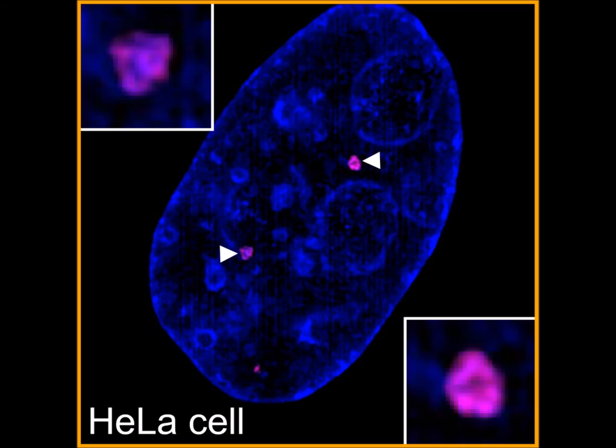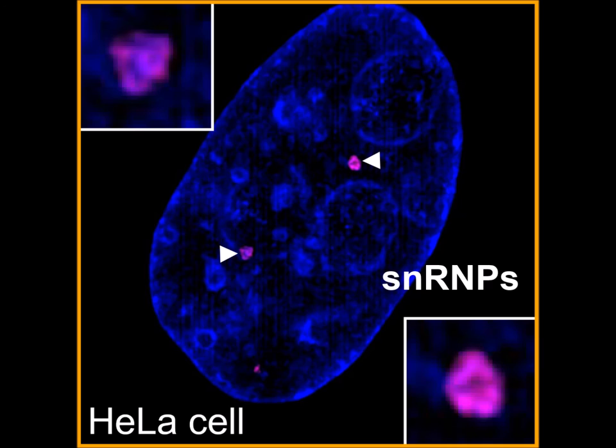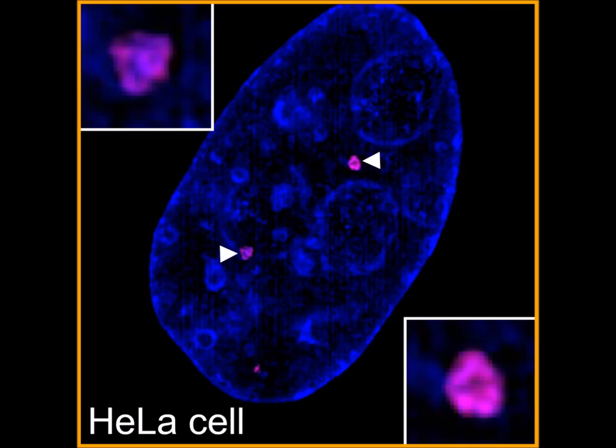The Cajal body is a prominent one micrometer diameter structure that exclusively resides in the nucleus and lacks a defining membrane. It is known to form at sites of small nuclear RNA (snRNA) gene expression, where it catalyzes the processing, base modification, and packaging of nascent snRNAs into fully functional mature snRNPs. These mature snRNPs are then trafficked to another nuclear body known as the nuclear speckle, where they catalyze mRNA splicing as part of the spliceosome. The Cajal body also catalyzes the reassembly of several snRNPs after each round of splicing.